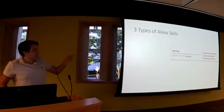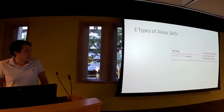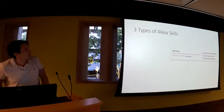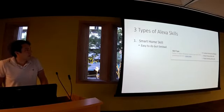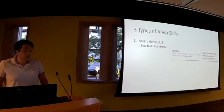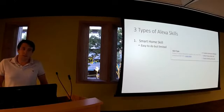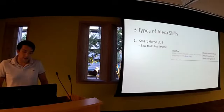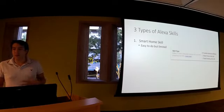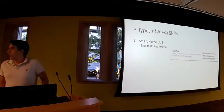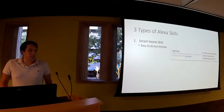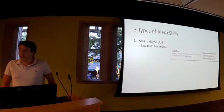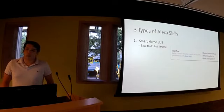This is a screenshot from the portal we were just looking at. There's three types of skills that you can build with Alexa. There's a smart home skill, which is really easy to do but limited. You have to do it in AWS Lambda and there are some phrases that you have to abide by. For example, if you want to control an IoT device and say Alexa, turn on my lights, you're able to do that.